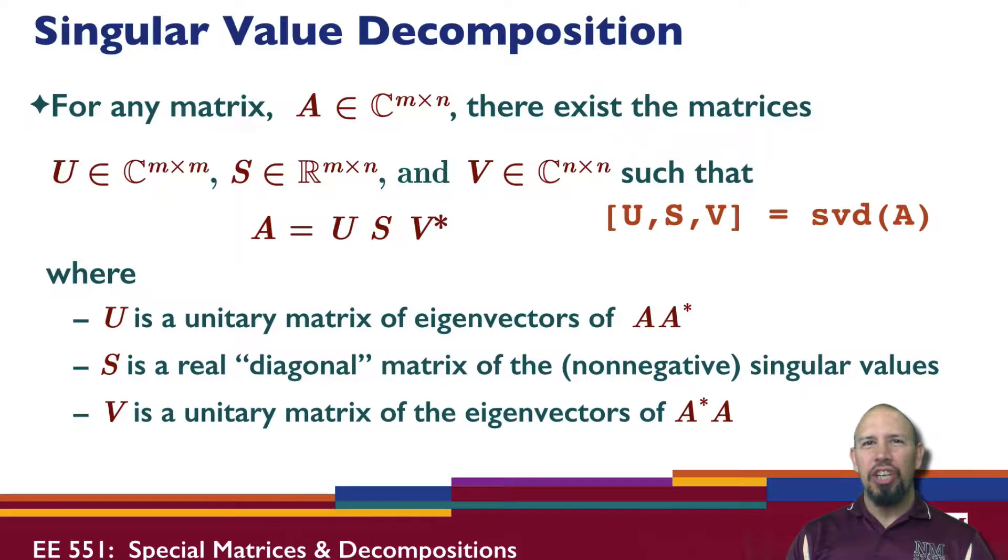All right, now we're going to look at the singular value decomposition, which is our next decomposition. So the singular value decomposition basically is described this way: for any complex m by n matrix, notice when we did the eigenvalue decomposition, we needed a square matrix. Here we don't need a square matrix. So the singular value decomposition is more general than the eigenvalue decomposition.